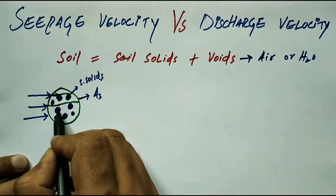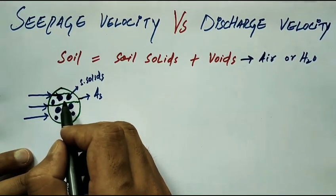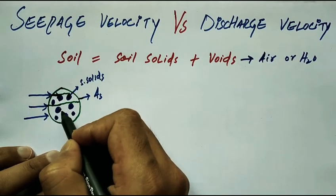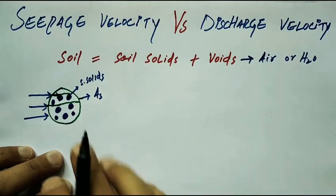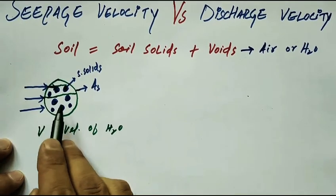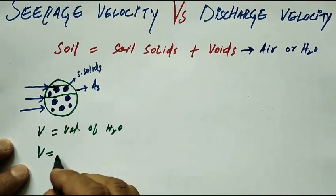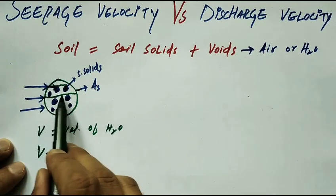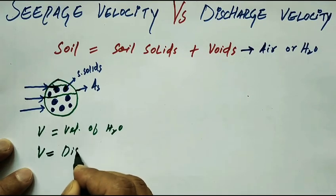The velocity of water will be reduced due to the restrictions caused by soil solids. Here, V is the velocity of water through the soil sample. This velocity V is called discharge velocity. Discharge velocity is the velocity of water through the soil sample, which includes both soil solids and voids.